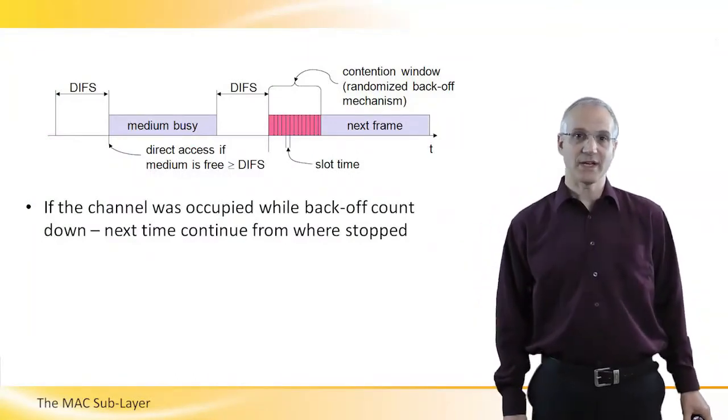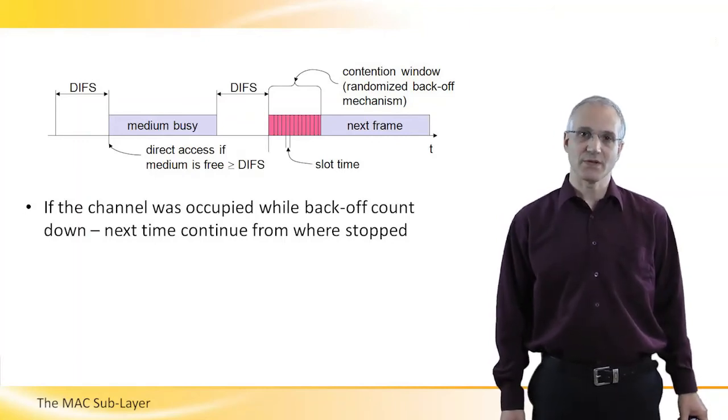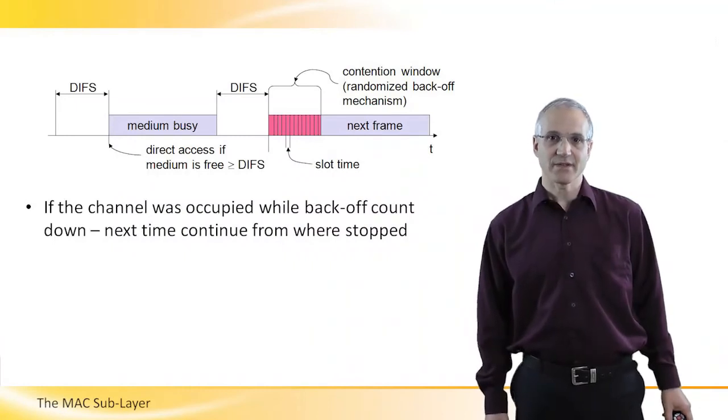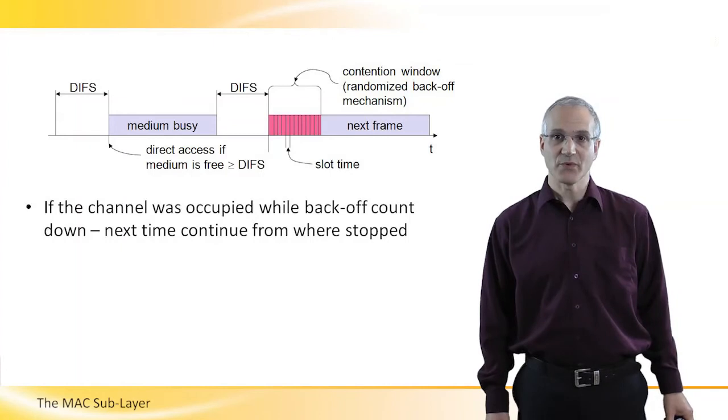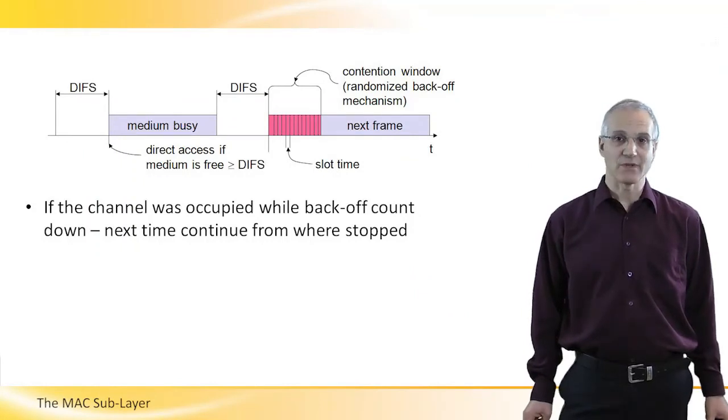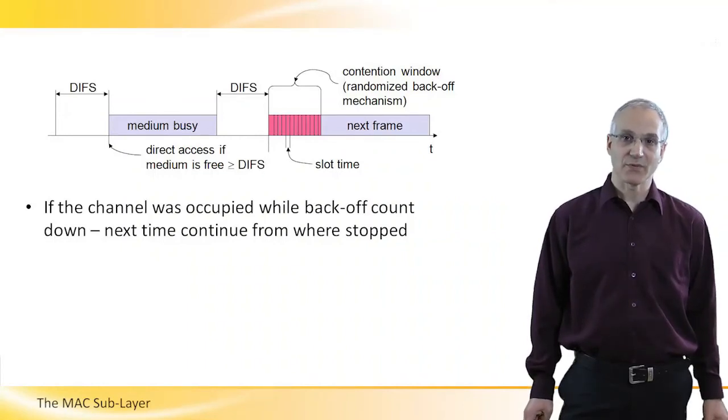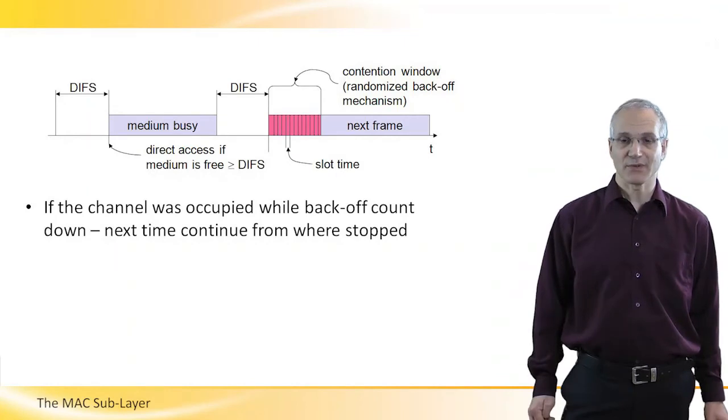So, to detect that the channel is idle, a user is waiting DIFS amount of time. But since we don't want to have collisions like in one persistent CSMA, each user then waits a random number of slots before it starts transmission. This will avoid many collisions. However, if every time I'm listening to the DIFS period of time, and I'm losing the collision, I have to redraw the amount of time I'm waiting, it will cause some fairness issue. So, a user remembers the countdown of the number of slots it needs to wait, and next time it senses the channel to be idle, it continues the countdown from where it stops. This way, no single user keeps waiting and losing the competition to other users.